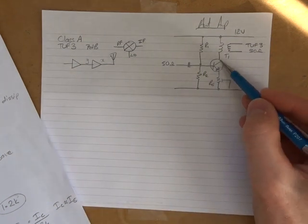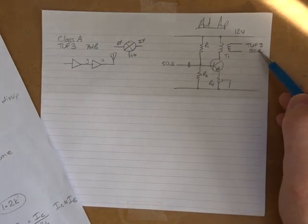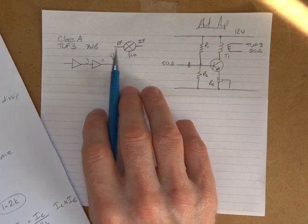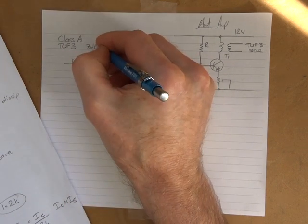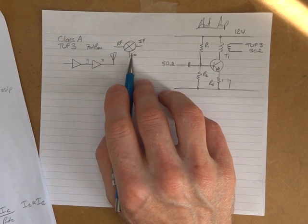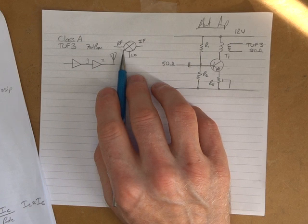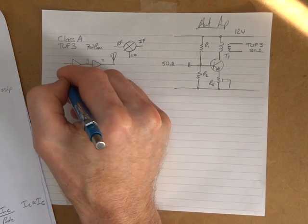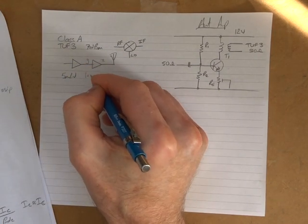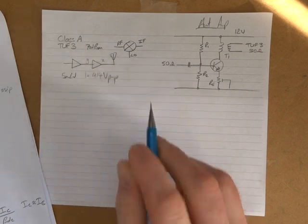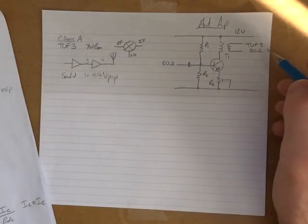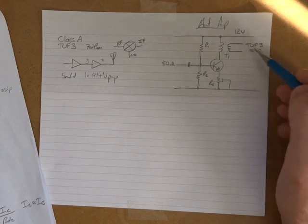So if that was the case, then this amplifier is going to be feeding a TUF-3, a mixer. And that particular mixer wants to see on the RF port and the LO port, according to the spec sheet, 7 dBm. Now these are 50 ohm ports, so 7 dBm equates to 5 milliwatts. So 5 milliwatts for that 50 ohm load, which equates out to 1.414 volts peak to peak. So that's what I need to be able to deliver into that particular load there.